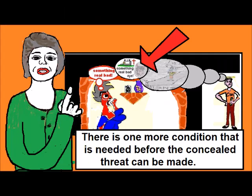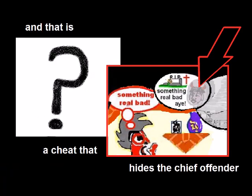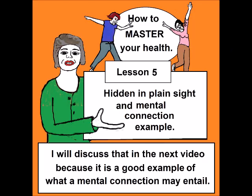Now, there is one more condition that is needed before the concealed threat can be made, and that is a cheat that hides the chief offender. I will discuss that in the next video because it is a good example of what a mental connection may entail.